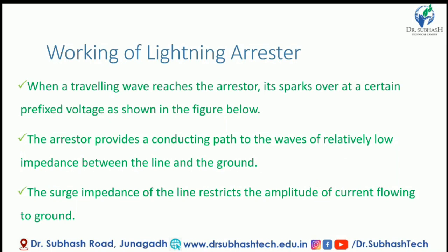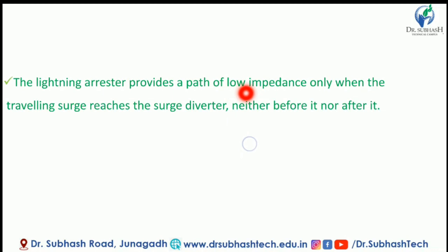The surge impedance restricts the value of current flowing to the ground. The Lightning Arrestor provides a path of low impedance only when the travelling surge reaches the Surge Diverter — neither before nor after. The Arrestor provides this low impedance path only at the moment of surge.